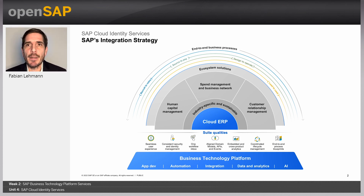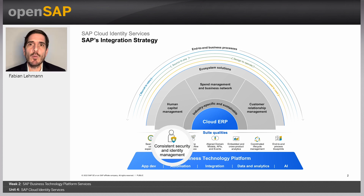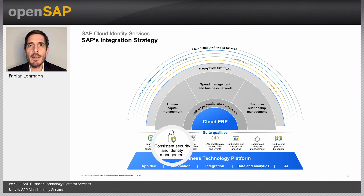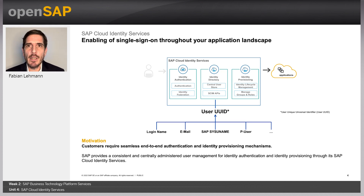My colleague Matt Asmus talked about the SAP Integration Strategy topic. Let's focus directly on suite quality, consistent security and identity management. Looking closer at SAP Cloud Identity Services, we see a focus on authentication — the identity authentication part. We also have the identity directory, which is used to provide SCIM APIs if you want to connect from external systems to Cloud Identity Services, or for the topic of user UUID or global user ID.